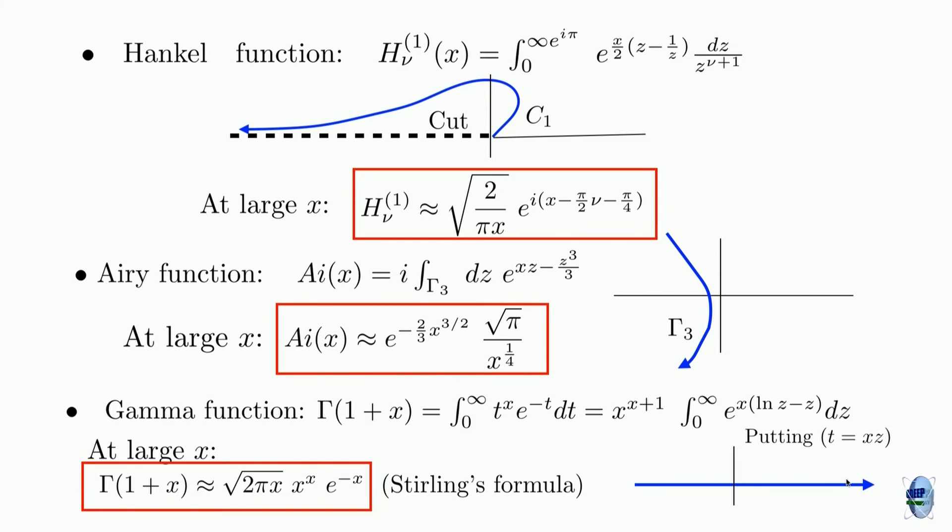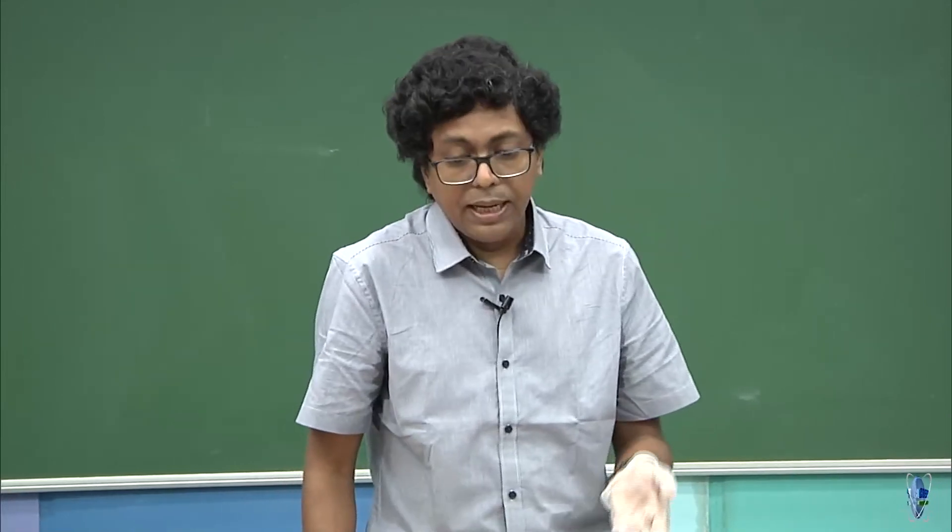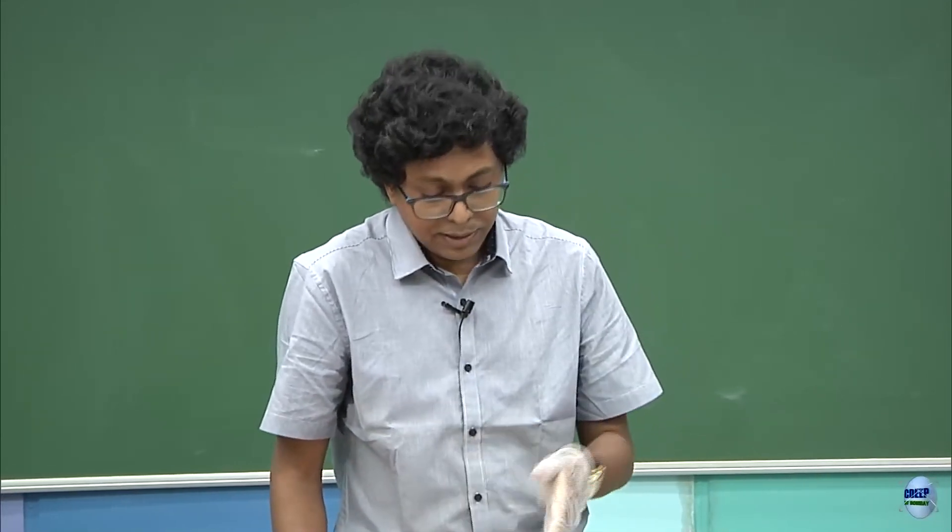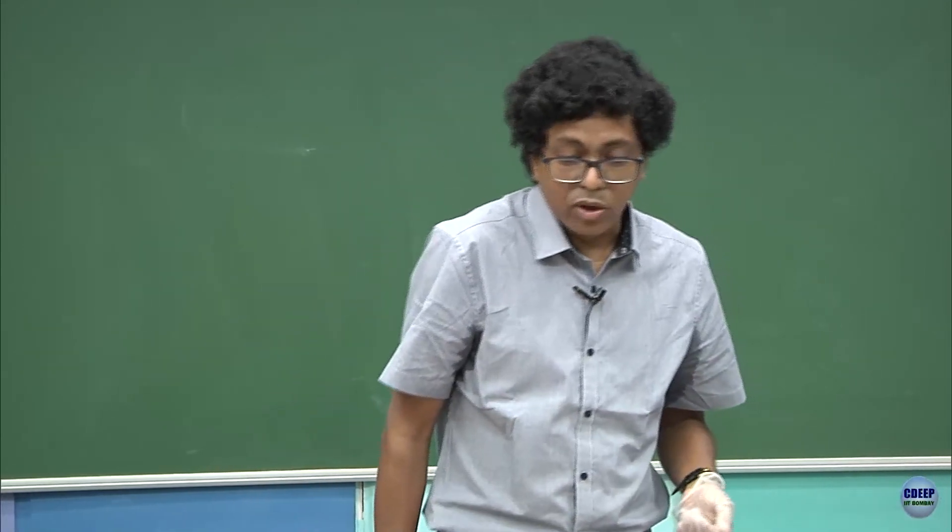So this kind of integrals that you see are very natural, and the question is: when x is large, how come such an integral has reduced to a Stirling formula? We would like to know all these mathematical steps by which you come from this kind of formula to here, this kind of formula to here, this kind of formula to here. And that is what we will do in the next two lectures—today and in the next session also. Thank you.